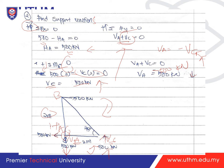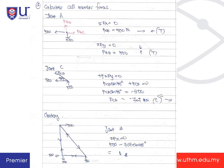Now in the third step, calculate forces for all members using the joint method. At joint A, there are only two unknowns: FAB and FAC. Joint B has three unknowns and is not suitable to start with. Joint A has two unknowns and two known values (HA = 500 kN leftward and VA = 500 kN downward), so joint A is the correct starting point.